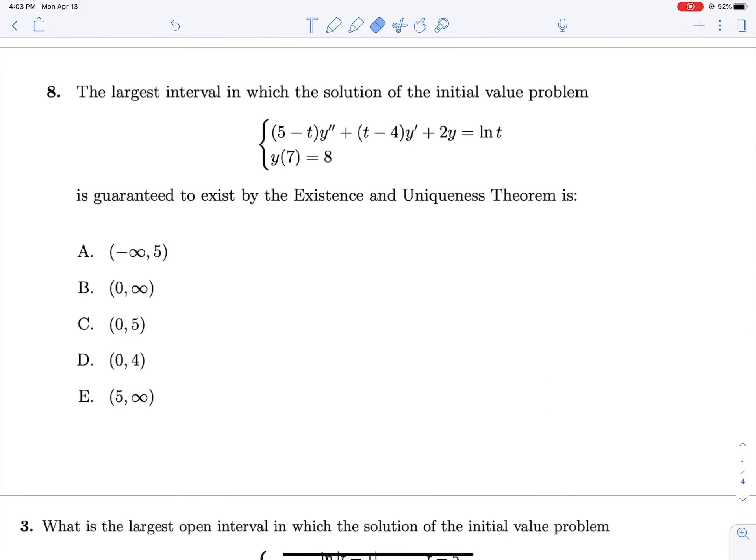Similarly, we have a very similar question. These are all pretty formulaic. So doing what we did before, y double prime plus t minus 4 over 5 minus t, y prime plus 2 over 5 minus t, y equals ln t over 5 minus t.